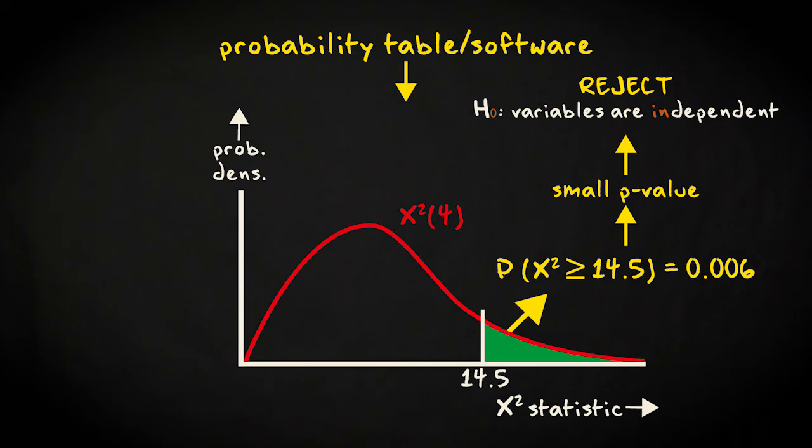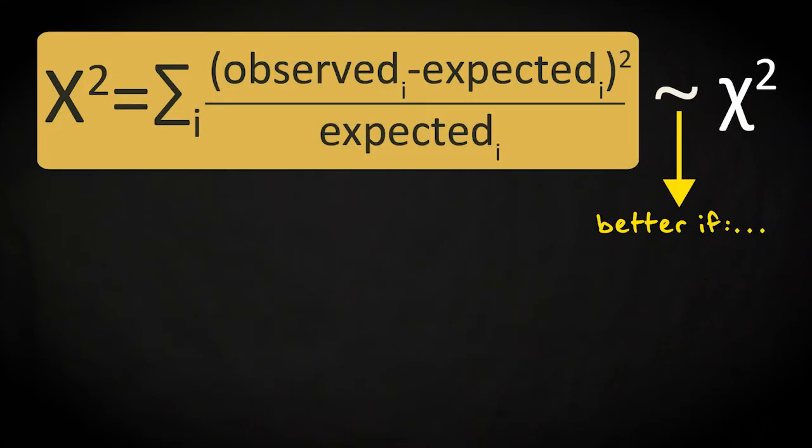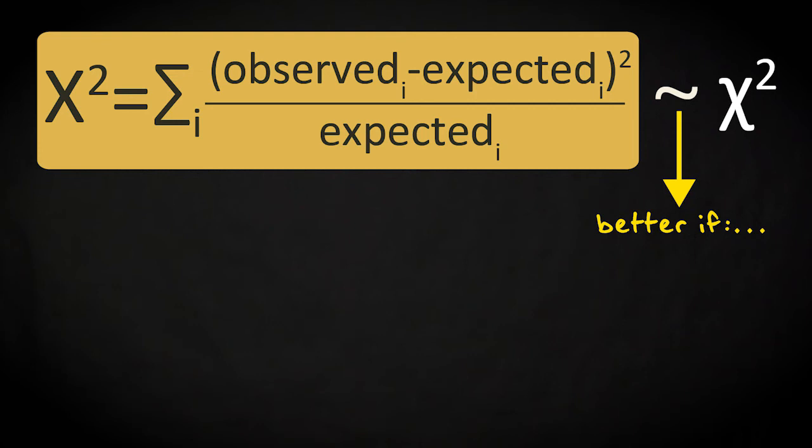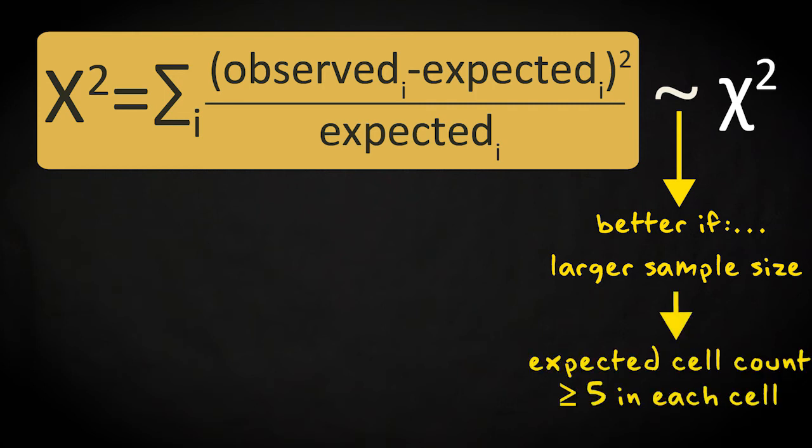Similar to what is the case in other parametric distributions, the chi-squared statistic is better described by the chi-squared distribution if the sample size, that is the total number of cases in the cross table, increases. The minimum number of required samples is however not described by the table's total, but rather at the cell level. The sample size should be such that the expected cell count in each cell is at least 5.